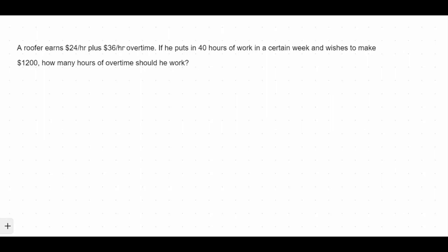So it says that a roofer earns $24 an hour plus $36 an hour overtime. If he puts in 40 hours of work in a specific week and he wishes to make $1,200, how many hours of overtime does he need to work?